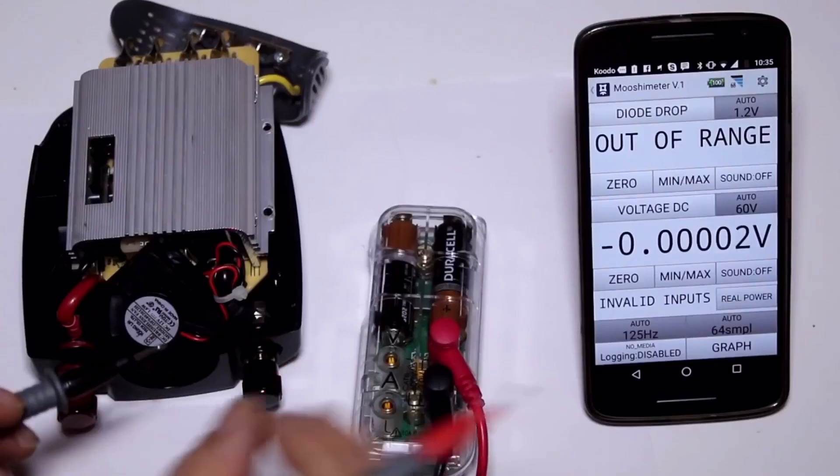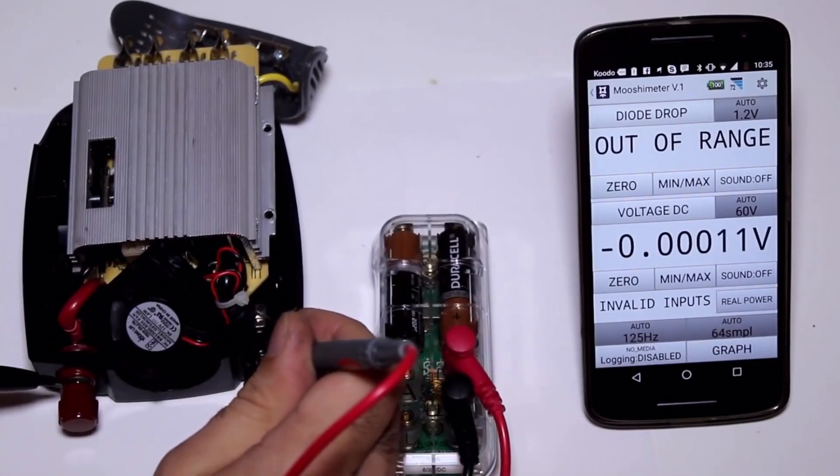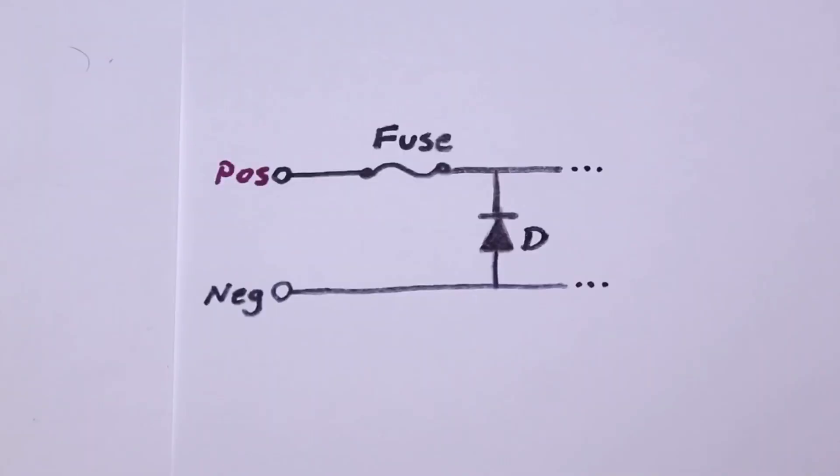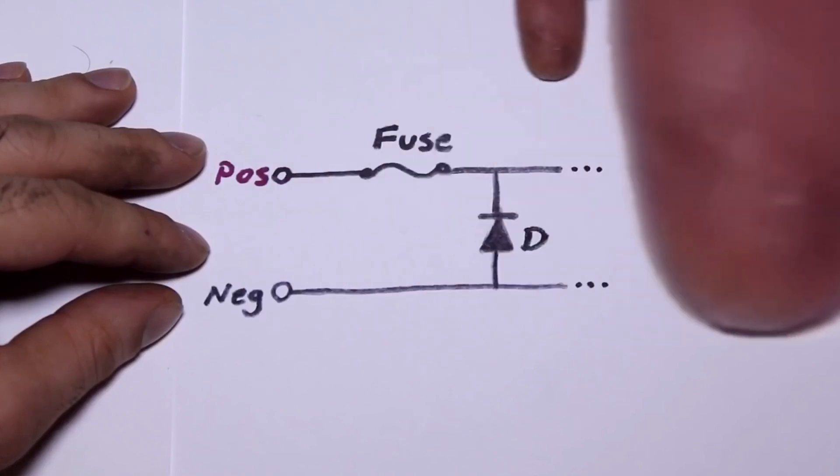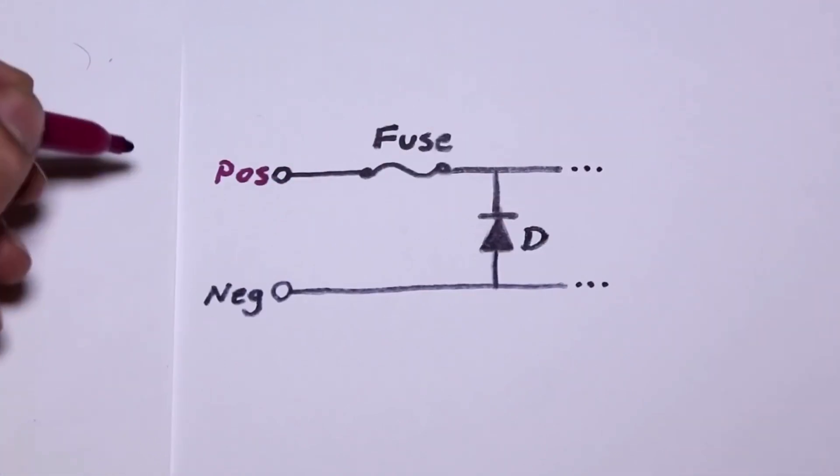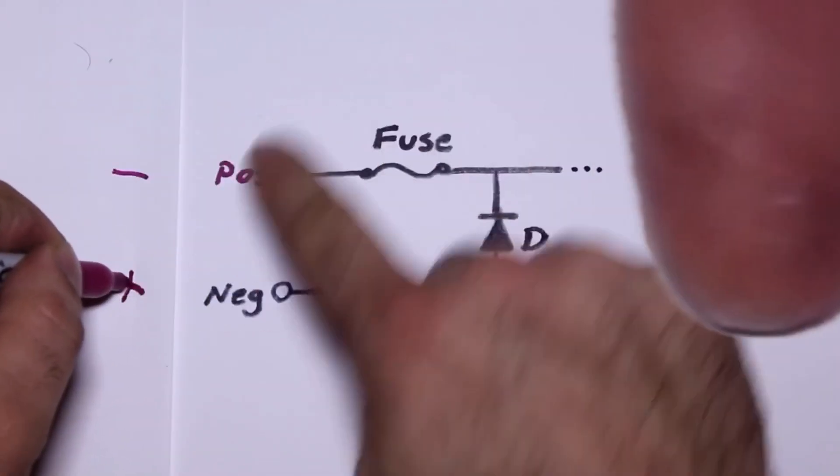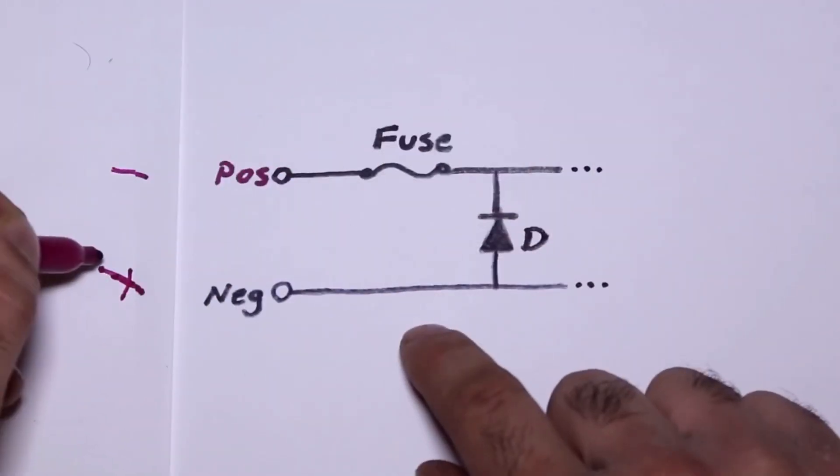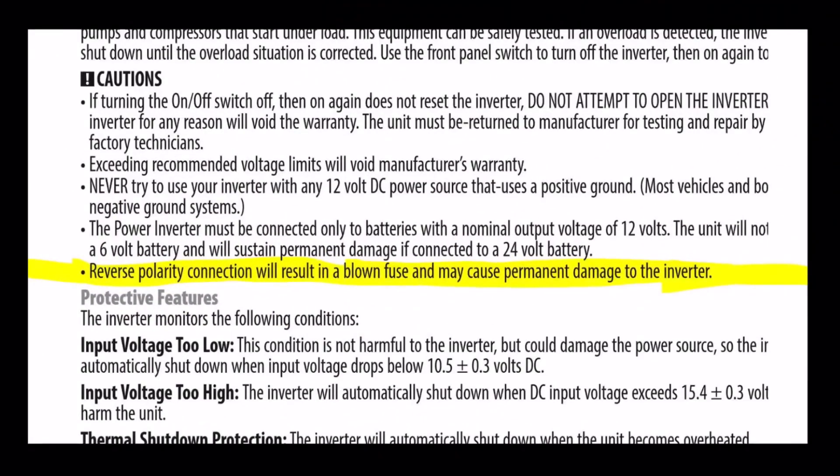I replaced the fuse and now if I connect my trusty multimeter to the input terminals of the inverter in reverse, I can clearly see this is the circuit they have. If we connect the battery here, the current goes through the fuse here and powers the circuit here. But if we connect the battery backwards like this, then the diode forward biases and there is a huge current through the fuse that blows the fuse. And it can't even protect the circuit here. Even their data sheet says reverse polarity connection will result in damage and may cause permanent damage to the inverter. Absolute garbage.